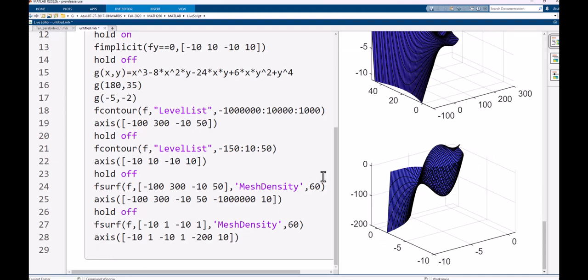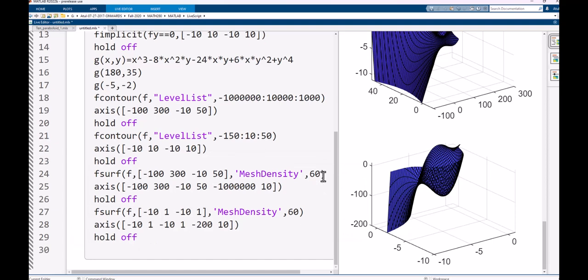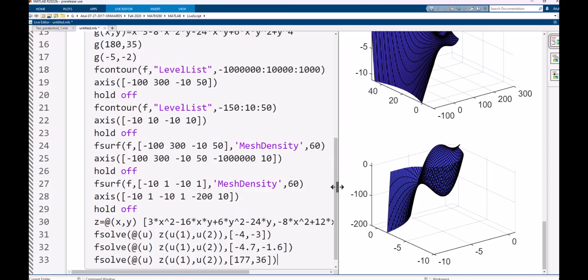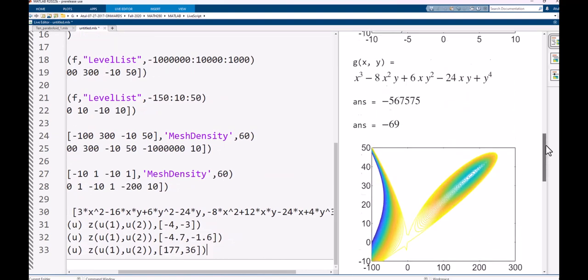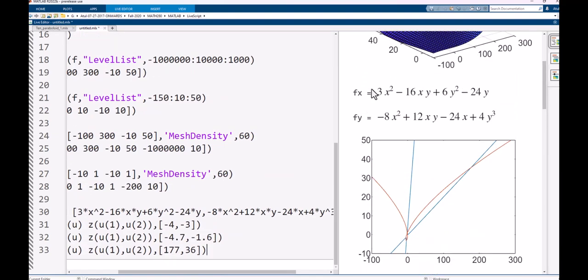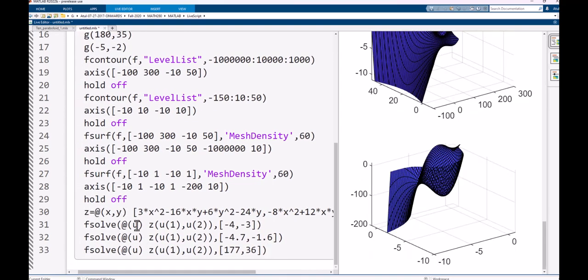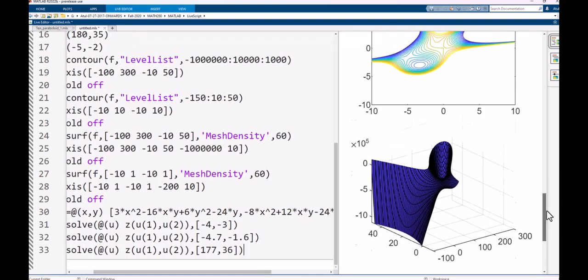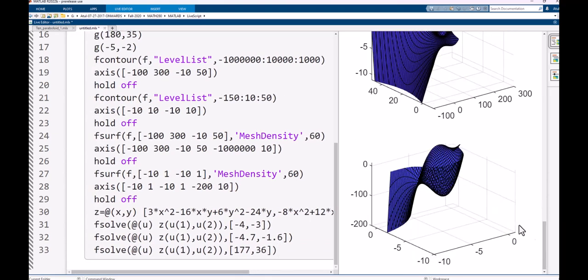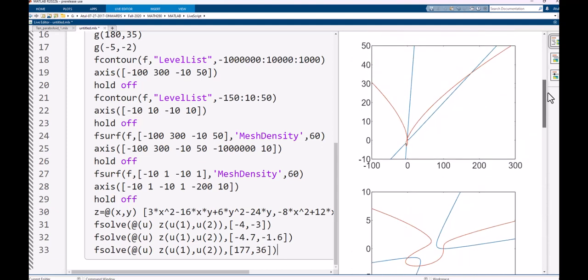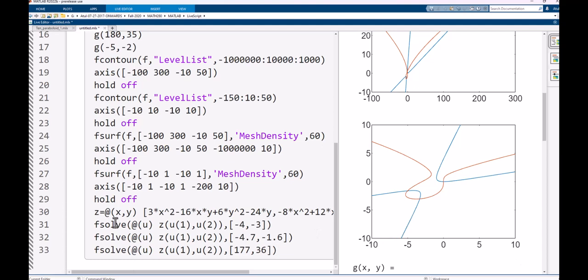Now we will find out the approximate values of the extrema, and the points where saddle points occur, and one of them we don't have to approximate, that was at the origin. So what I'm doing here is that I'm creating a function handle, and I created this handle by using, remember this? We had gotten the partial derivatives. Where are they? Right here. So I created a function handle, z at x, y, and here is the first component right here. That's the first component, and here I have typed in the second component, and then after that, what I'm doing is this.